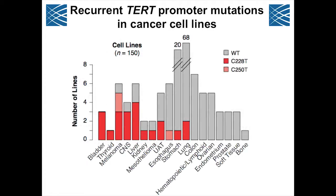Across those 150 cell lines, we found TERT promoter mutations in bladder, thyroid, melanoma, CNS tumors, liver, kidney, mesothelioma, and upper digestive tract cancers at high frequency. Less so in esophagus, stomach, and lung. In these other tissue types we did not see any.